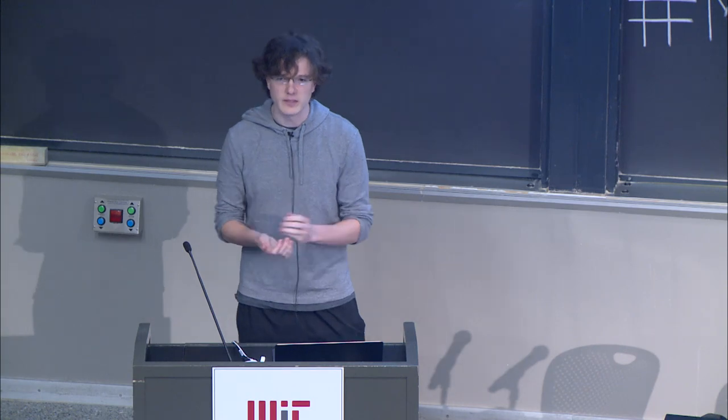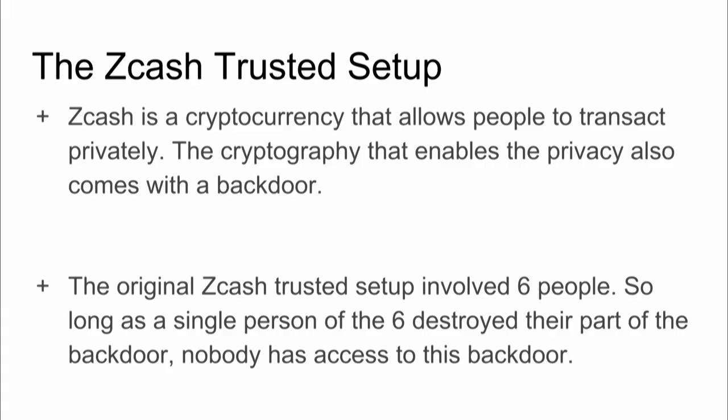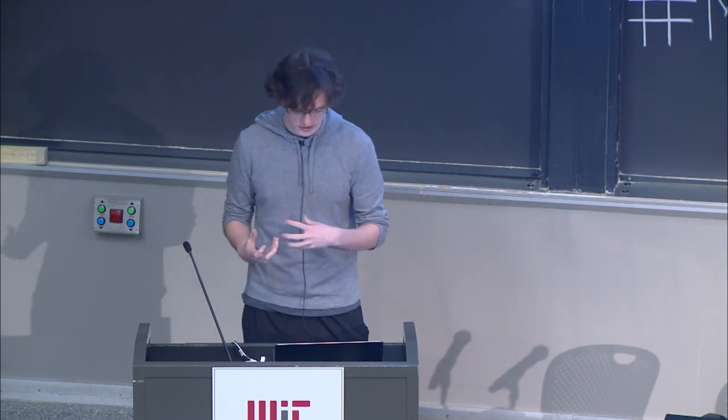The most famous example of trusted setup right now is the initial Zcash trusted setup. I'll focus on the initial one because I think it's the most instructive. Zcash is a cryptocurrency that allows people to transact privately — you can send money without disclosing where it's coming from or how much it is. Most ledgers are very public. Zcash hides all this, but to achieve this in a computationally reasonable way, it uses something called a SNARK, which requires a trusted setup. The original Zcash trusted setup involved six people.